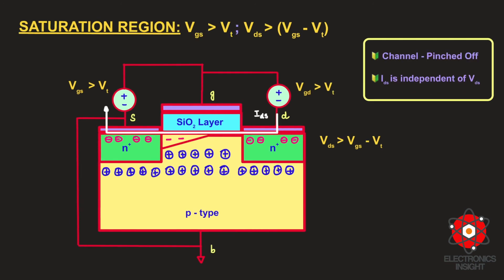Now, to begin the discussion of the saturation region: we already have VGS greater than VT. In the linear region, VDS was a very small positive voltage — greater than zero but less than VGS minus VT. Now we increase VDS to be greater than VGS minus VT. When more and more positive voltage is applied to the drain terminal, which is rich in electrons, the depletion region around the drain side extends further towards the source.